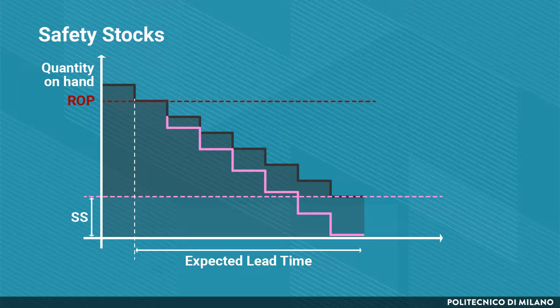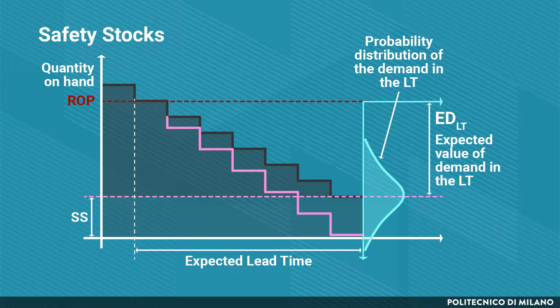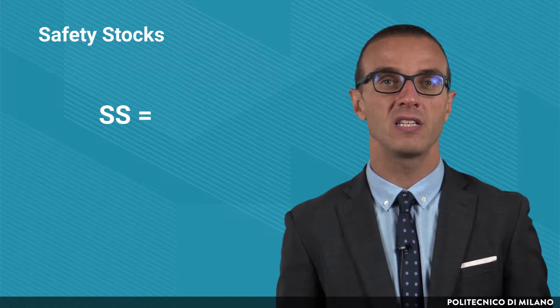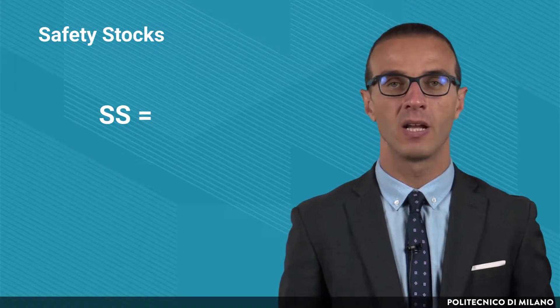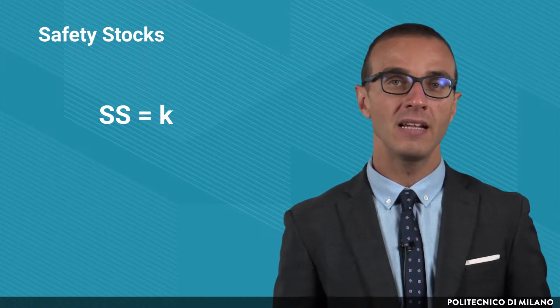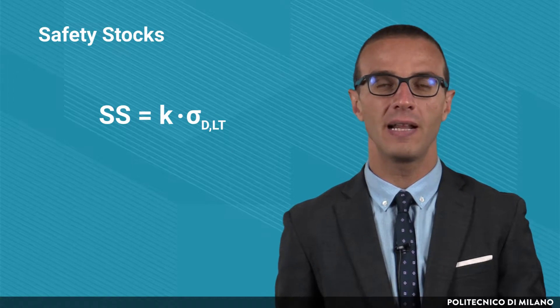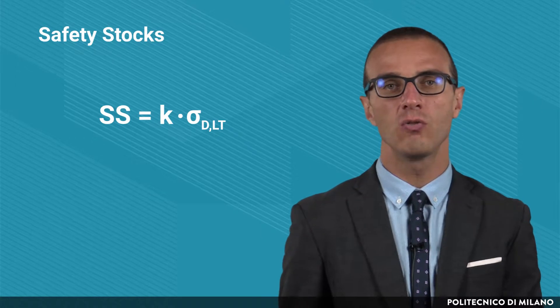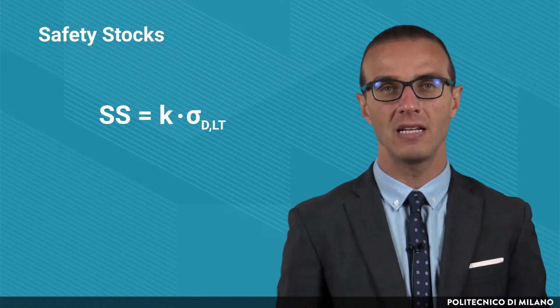In the reorder point model, safety stocks cope with the uncertainty of both the demand during the lead time and the lead time. We assume that both demand and the lead time are normally distributed and that we know their average values and their standard deviations. The safety stock level for a specific item is computed as the product between two factors: k, which is the coefficient that takes into account the target service level, and the standard deviation of the demand during the lead time. This is a composite standard deviation which includes uncertainty of both the demand and the lead time.